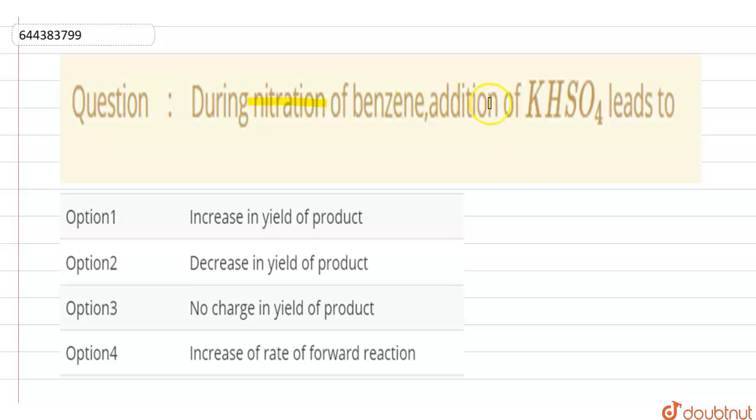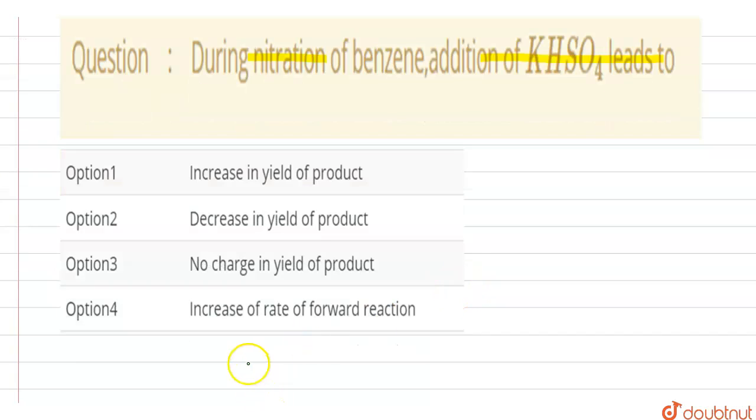So first we should know what is nitration. Nitration of benzene takes place in the presence of HNO3 plus H2SO4, and after a series of reaction steps, this nitro group is added here.